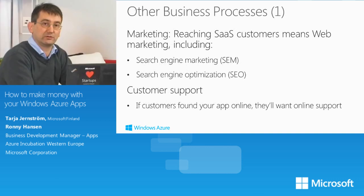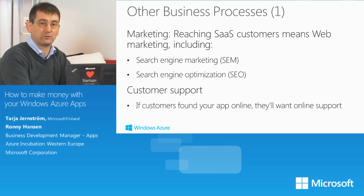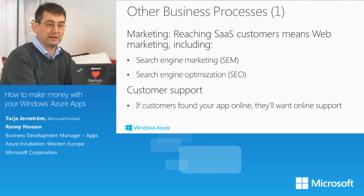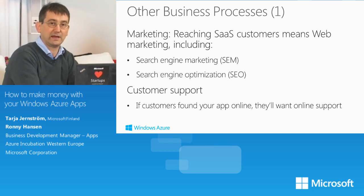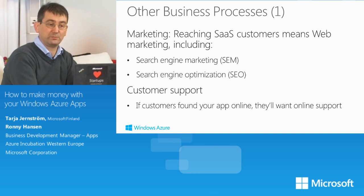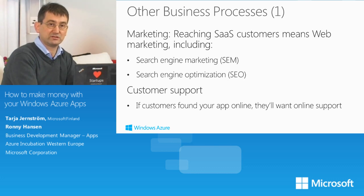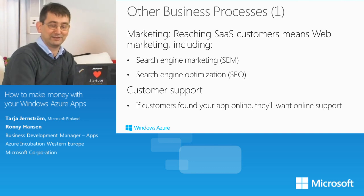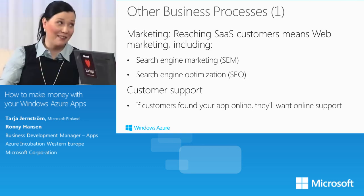When marketing your software as a service solution, that means web marketing — people are on the web searching for it. You should do search engine marketing with Google Ads or Bing Ads, and search engine optimization so people can find your app. If people find your applications online, they probably want online support, but traditional telephone support is also very important — people really want someone to call when they're stuck, and if your website is down they want to know what's happening.